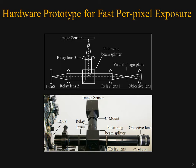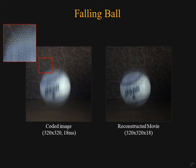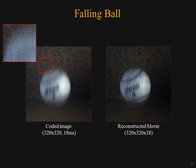To implement our sampling scheme, we have developed a hardware prototype using a liquid crystal on silicon, or LCOS device. Let's look at some real experimental results. Here is an example of simple translation motion of a tennis ball. Notice the coded motion blur on the input image — total exposure length is 18 milliseconds. Eighteen frames were reconstructed from the input image. The motion is recovered faithfully while retaining high-resolution texture details on the ball.